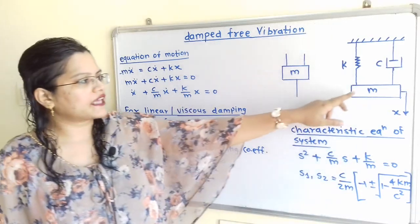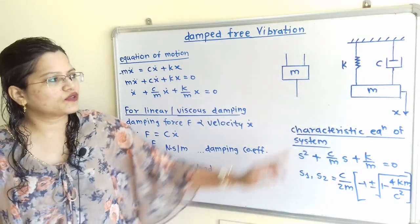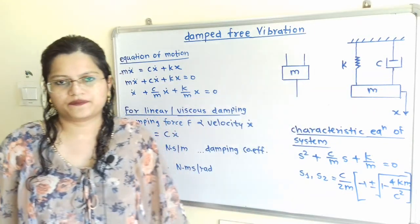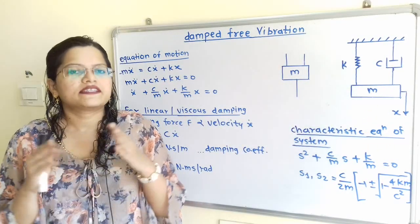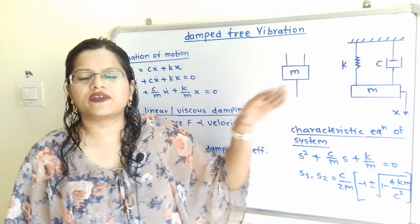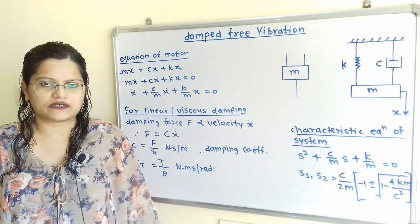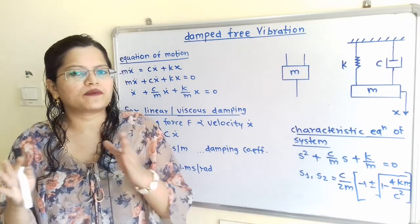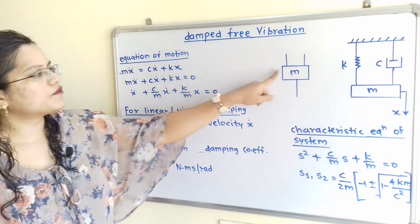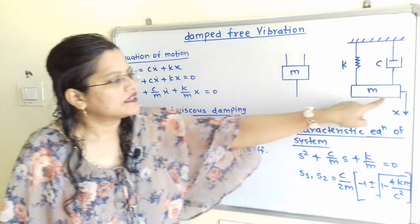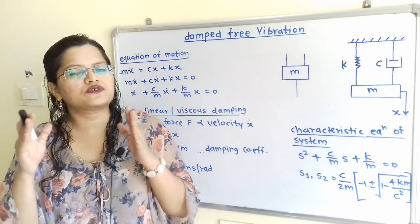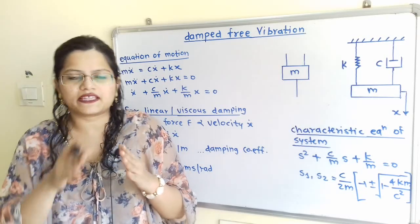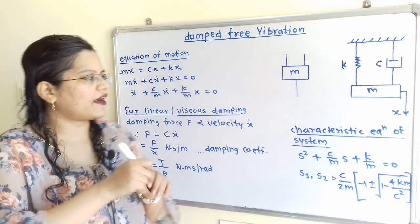If we observe this diagram, mass M is connected to the spring with stiffness K and a dashpot. Suppose this mass M is displaced through a distance X in a downward direction. Then the spring force and the damper force will act in the upward direction. We have to show this with the help of a free body diagram, showing mass M, with displacement in the downward direction. So acceleration force also acts in the same downward direction.